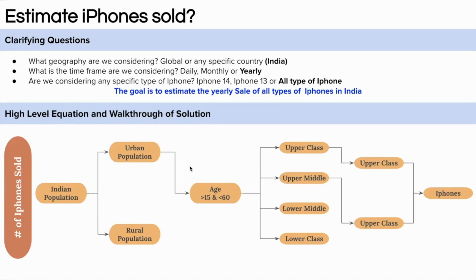Here there is a catch — we also need to consider the lifetime of the iPhone. Let's assume that people change their phones every three years. So we need to divide by three to get the yearly sale of iPhones in India. I hope you are very clear with this approach. Let's start putting in the numbers.